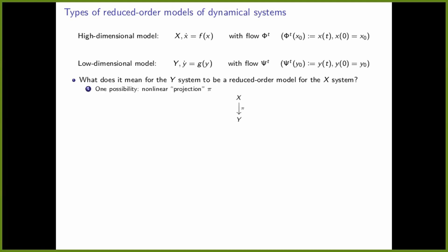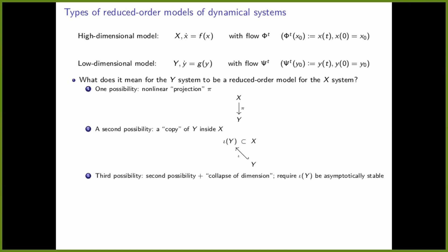What I want to ask is: in a precise sense, what does it mean for the Y system to be a reduced order model for the X system? To compare the dynamics on these two different spaces, we need some kind of map between them. One option is a map from X to Y — a nonlinear projection. Another option is an embedding of Y into X, a copy of the Y space sitting inside X. A third possibility is not only having a copy of Y inside X, but also requiring all ambient dimensions to collapse onto it — i.e., requiring the copy of Y to be asymptotically stable.